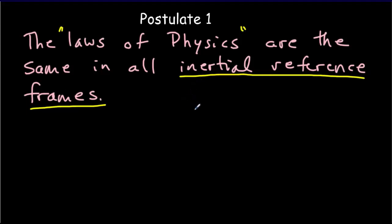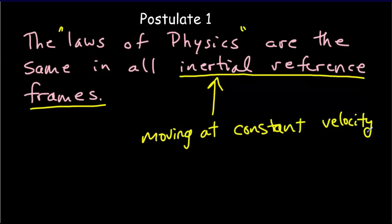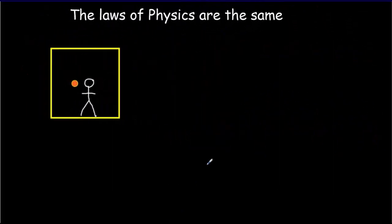An inertial reference frame is easy — it's just a reference frame that's moving at constant velocity. It's any reference frame where there's no acceleration. We don't have speeding up, slowing down, oscillations, or turning. Our frame is moving in a straight line at constant speed. So what's meant by the phrase 'the laws of physics are the same in all inertial reference frames'?